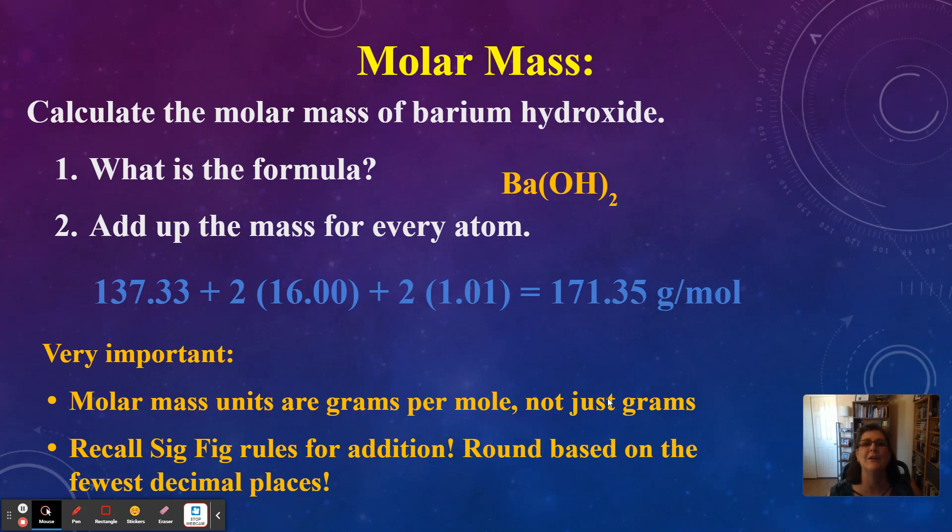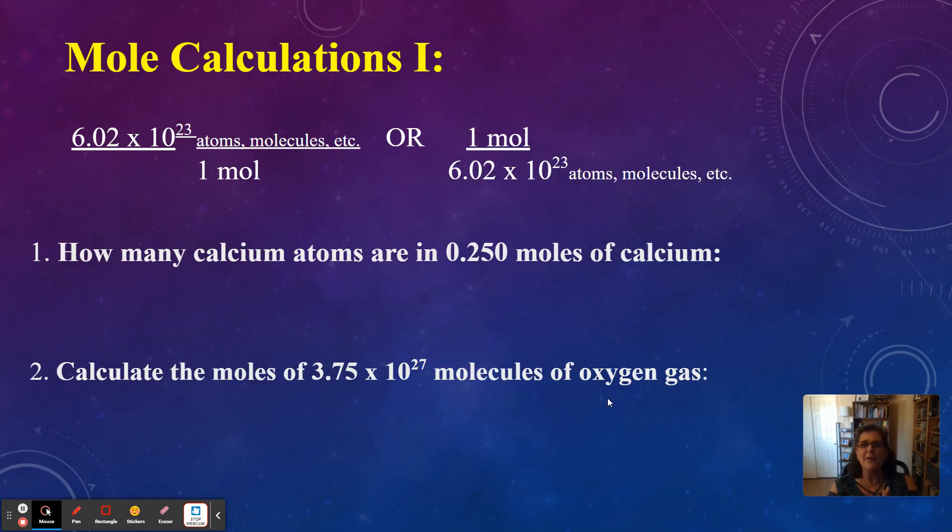All right. So let's move on to new material. Let's do some calculations using the mole. Get your calculators ready. We can use Avogadro's number as a conversion factor. So it is 6.02 times 10 to the 23rd atoms or molecules over one mole. Or we can flip that and do one mole over 6.02 times 10 to the 23rd atoms or molecules. Let's see how this works with a typical question number one.